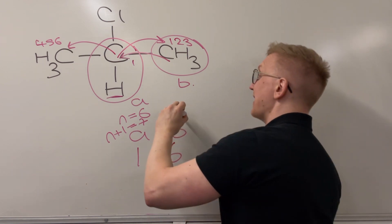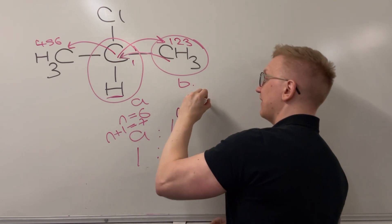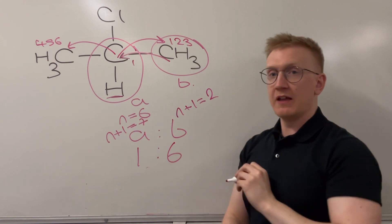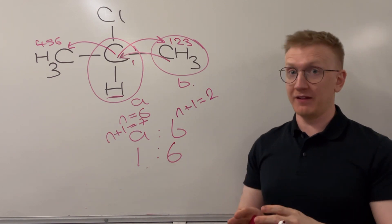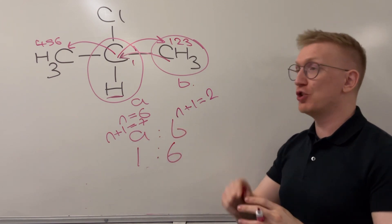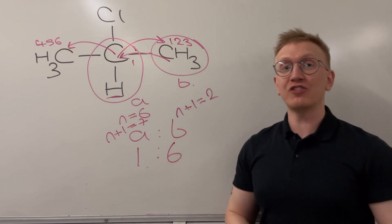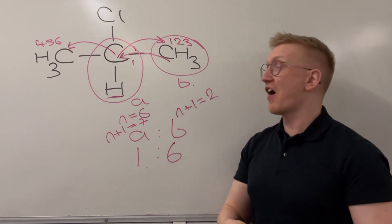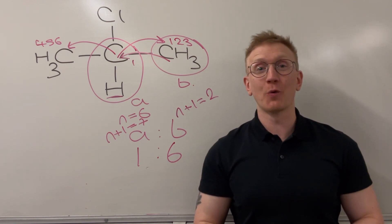So for environment B, my N plus 1 rule is going to be, well, just two. So this one's going to be a doublet. So I've got a septet and a doublet here for my two hydrogen environments, which are my two peaks on the hydrogen NMR spectrum of 2-chloropropane.